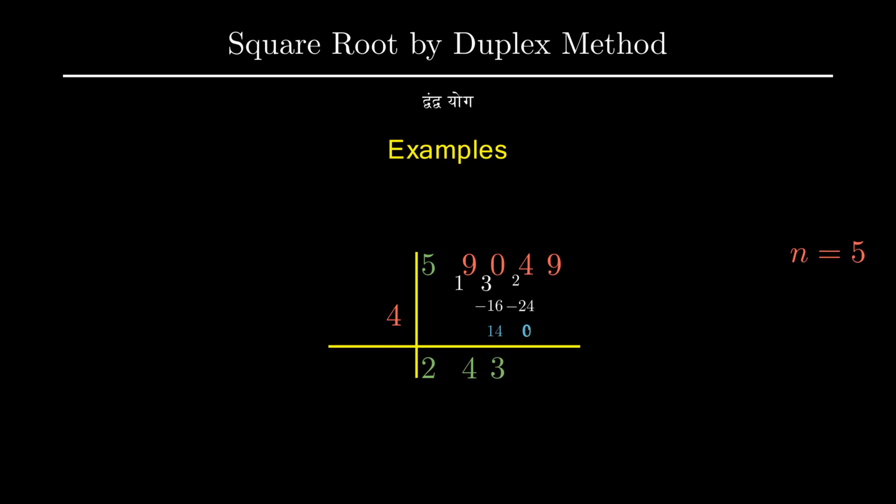This leaves us with 0. 0 is then divided by 4 to give us quotient as 0. Therefore we get the next digit of our final answer.